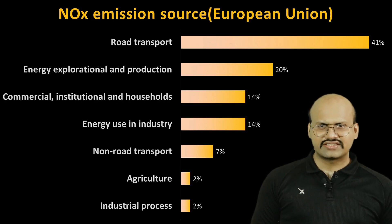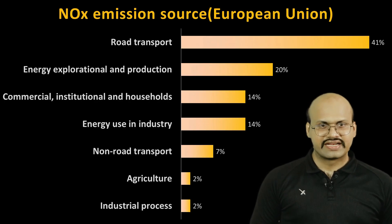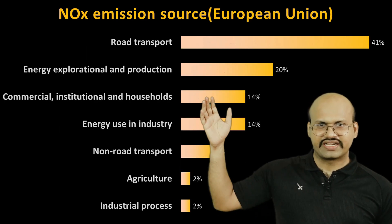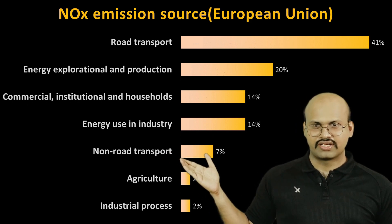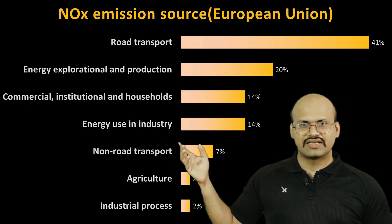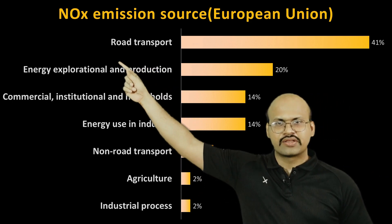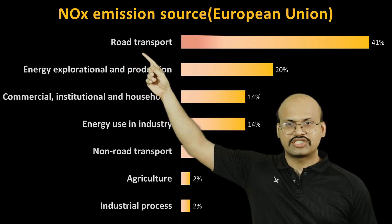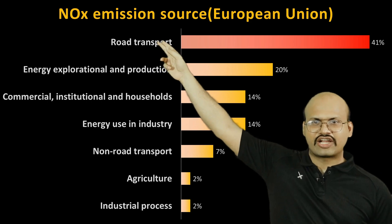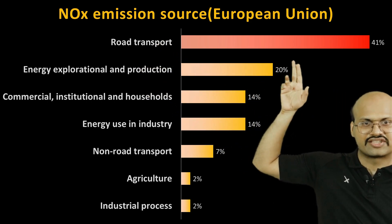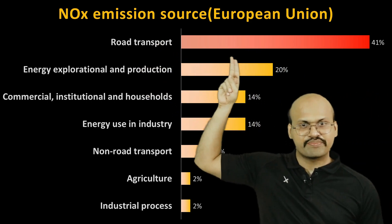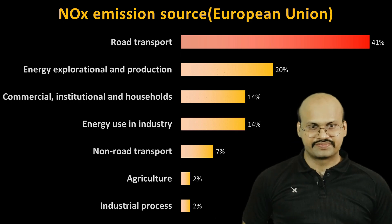Looking at nitrogen oxides: this data is for the European Union, but we can see that the maximum emission of nitrogen oxides comes from road transport, which is an important factor.